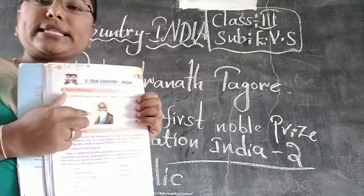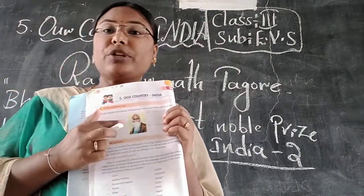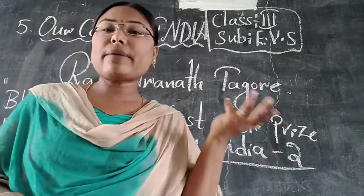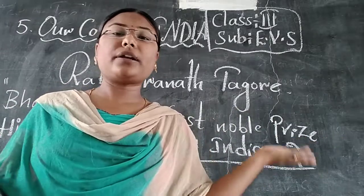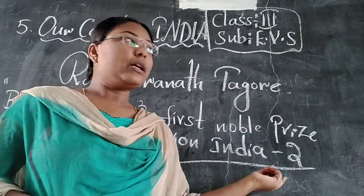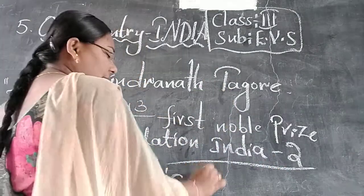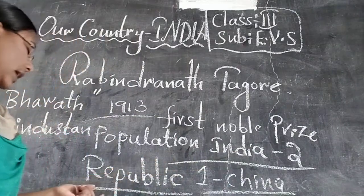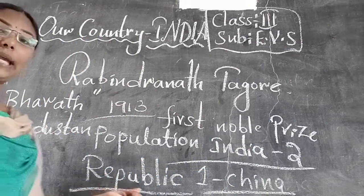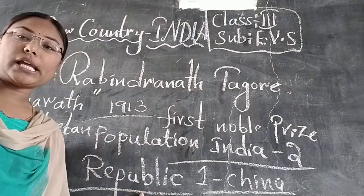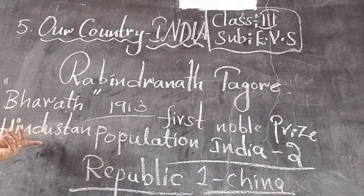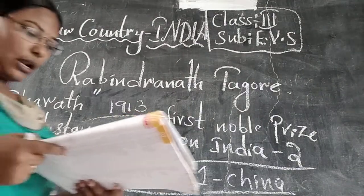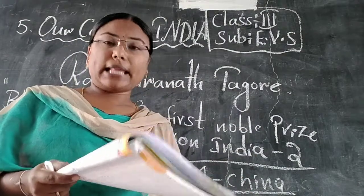Rabindranath Tagore is the first Nobel Prize winner of India, in the year 1913. India is our country and our motherland. India is a big country. In population, India is in second place and China is in first place. The official name of India is Republic of India, and other two names are Bharat and Hindustan. And states of India and their capitals — tomorrow we will discuss. Total 29 states and capitals are there, which you should learn perfectly.